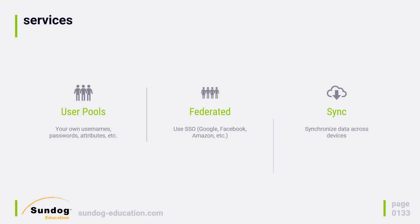Cognito isn't really one service. It's more like three that all operate under the same umbrella. The first service, and the one we'll be using, is User Pools. User Pools provide your app with its own identity, meaning your users have usernames and passwords just for your application or site. You can create groups and manage permissions at a fairly fine level. There are also quite a few options for customization.